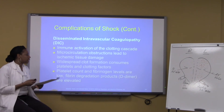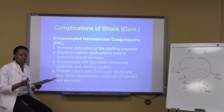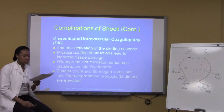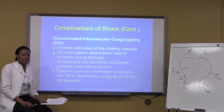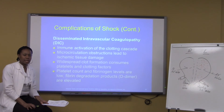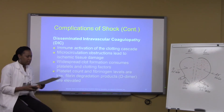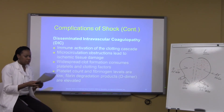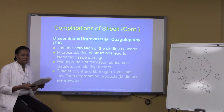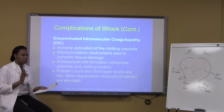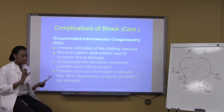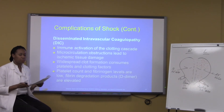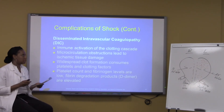The treatment for DIC — which we covered in Chapter 14 — includes giving patients anticoagulants and a transfusion of platelets to help with the clotting and bleeding.